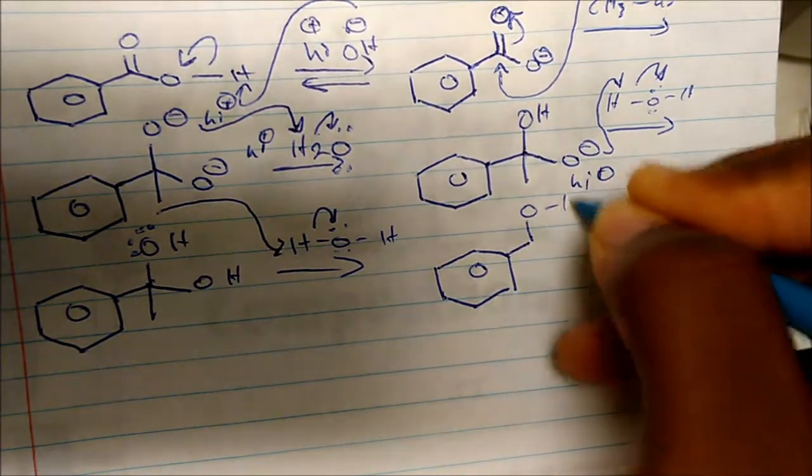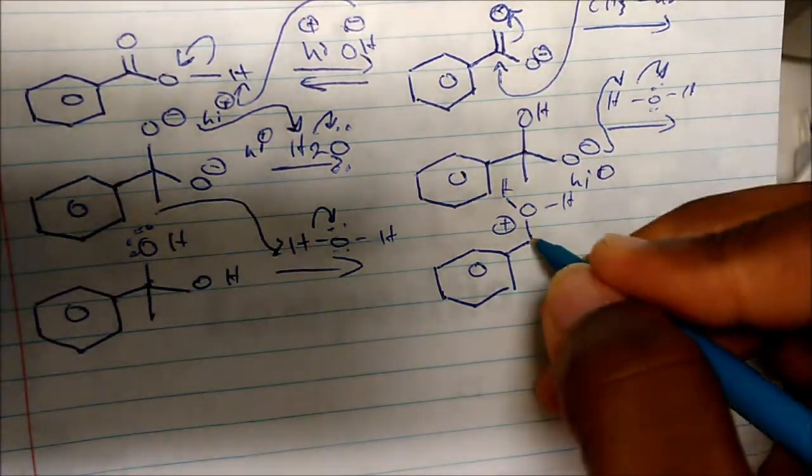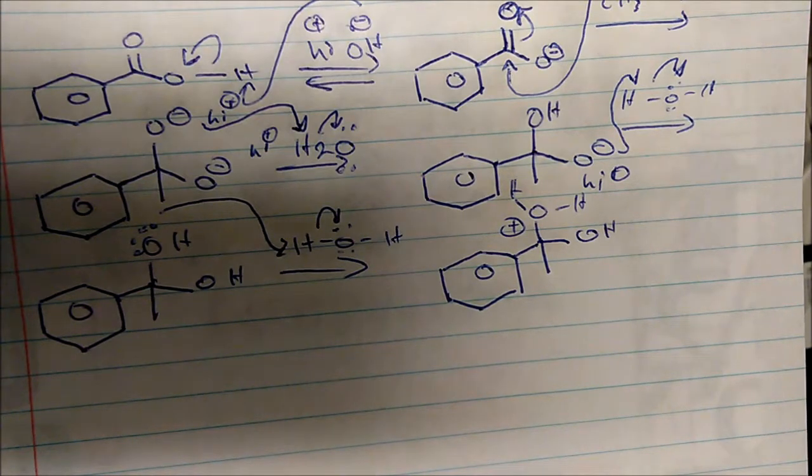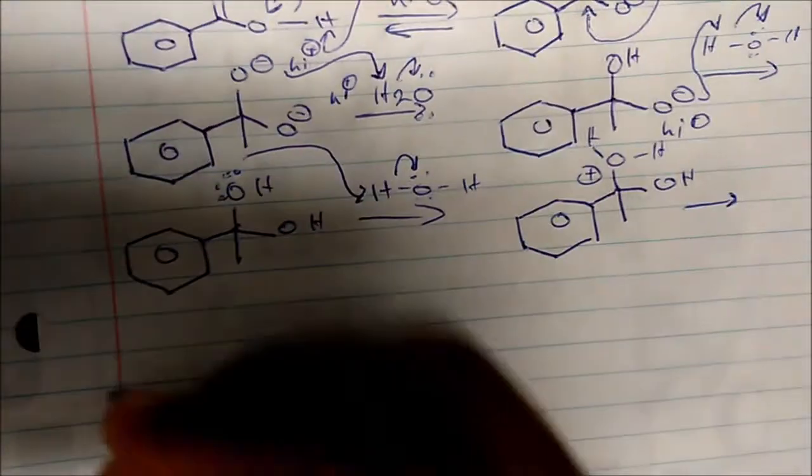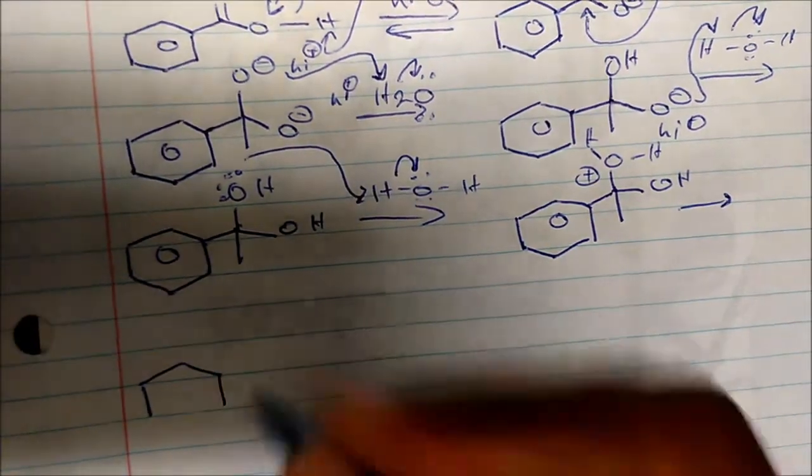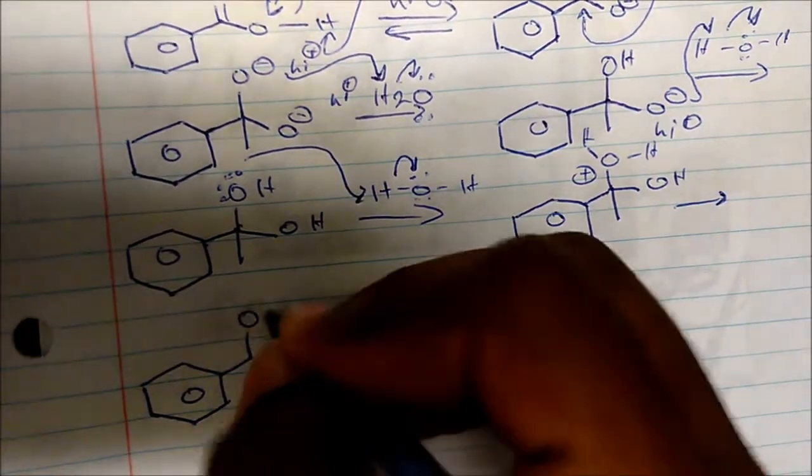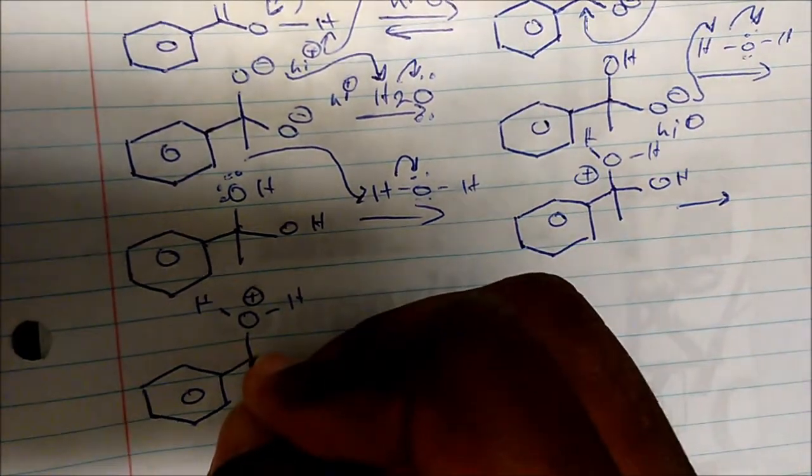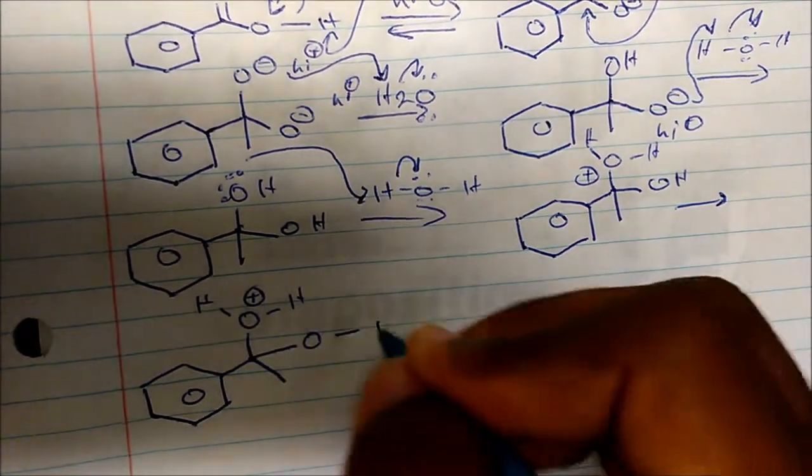So now we have an oxygen that has two hydrogens, it has a plus charge. We still have our hydroxide group out here, and we have this R group here. So let me redraw the structure so you can see it. So we have the R group, we have the benzo group, and we have an oxygen that has two hydrogens, plus charge. We have an R group, and then we have an oxygen that's bonded to a hydrogen.